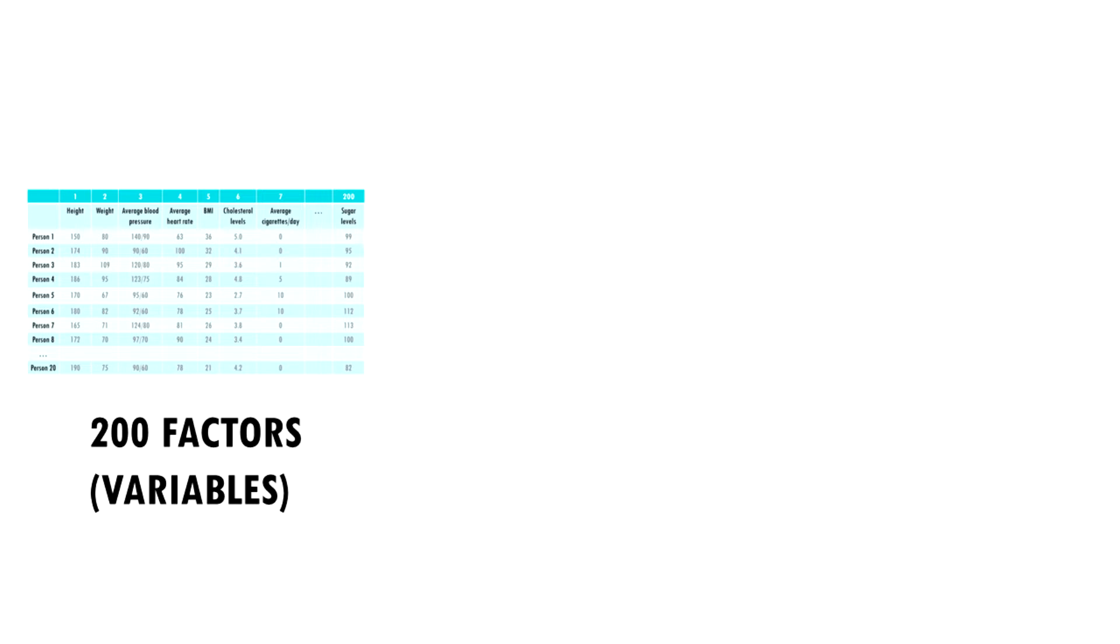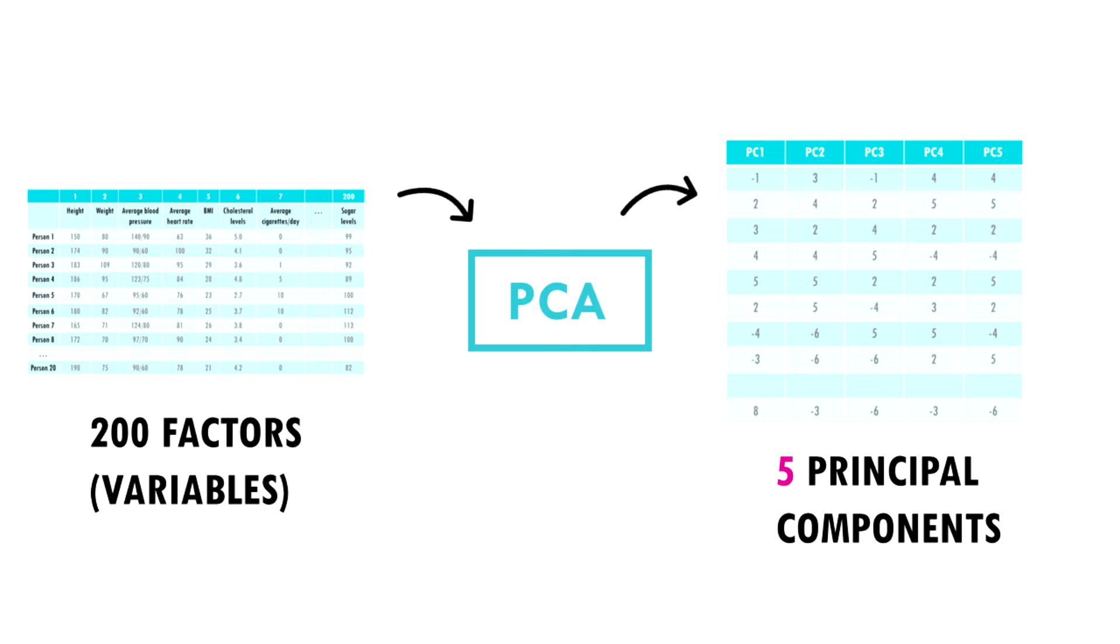Going back to our example, imagine we computed principal components analysis on our dataset and reduced our 200 dimensions to 5 principal components. This is amazing. We were able to simplify the data much more, and what's important, we didn't lose much information.